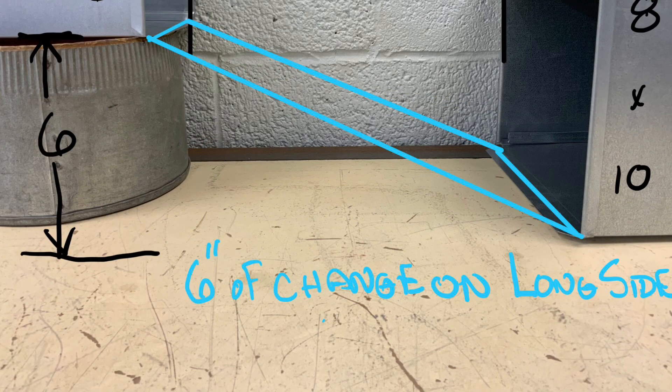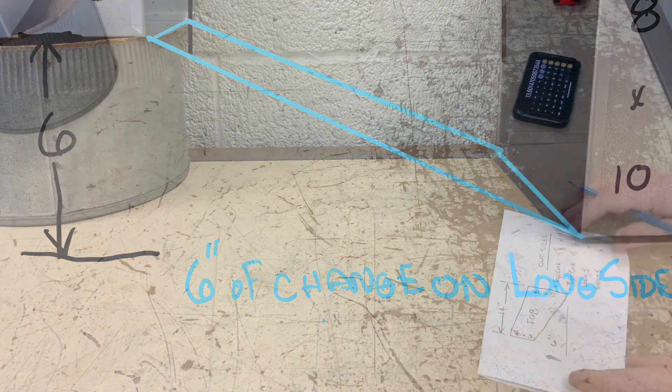This one is going to be the long side because it's the longest of all the pieces. It has a six inch slope.